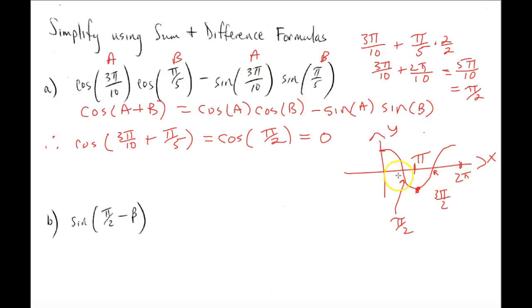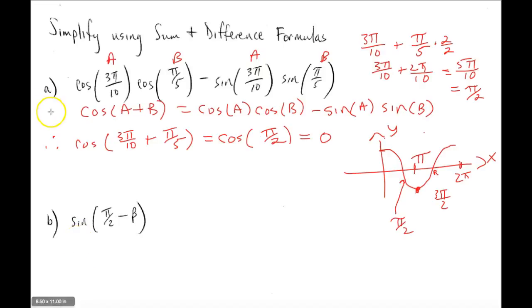Cosine of π/2 equals zero, because π/2 is where the cosine function first crosses the x-axis. So our answer is 0.